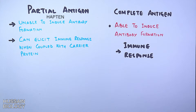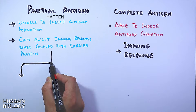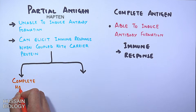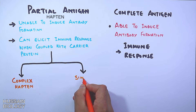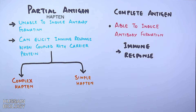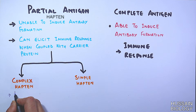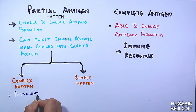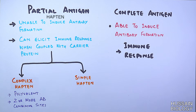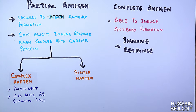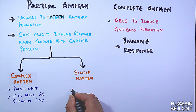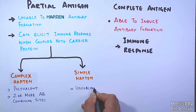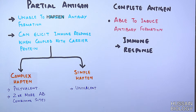We also classify haptens into complex haptens and simple haptens. Complex haptens have a large molecular weight, are polyvalent compounds, and have two or more antibody combining sites. Whereas simple haptens have low molecular weight and are univalent in nature.